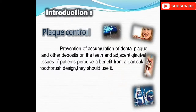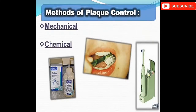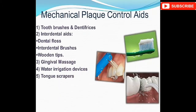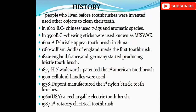Plaque control is the prevention of accumulation of dental and other deposits on the teeth and adjacent gingival tissues. If patients perceive benefit from a particular toothbrush design, they should use it. The methods of mechanical plaque control include toothbrushes and dentifrices. Auxiliary dental aids consist of dental floss, interdental brushes, wooden tips, gingival massage, water irrigation devices, and tongue scrapers.